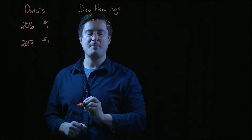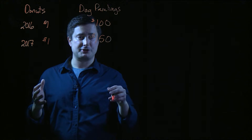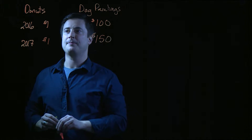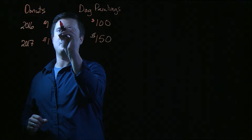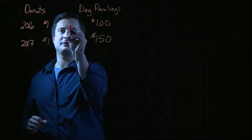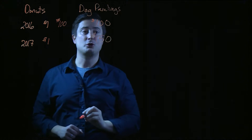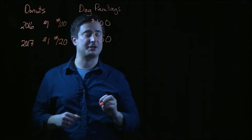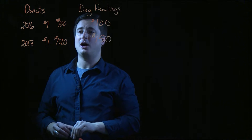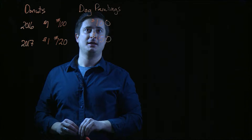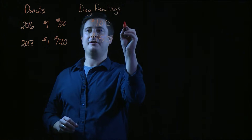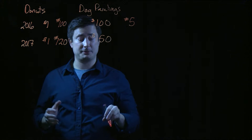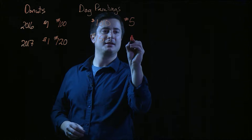Now that's the prices. How many units are produced? What are the final goods and services produced in these two years? In 2016, one hundred donuts are produced and eaten. In 2017, there are one hundred and twenty — consumers in this economy are consuming more donuts. In 2016, there are five dog paintings consumed, and there are six in 2017.